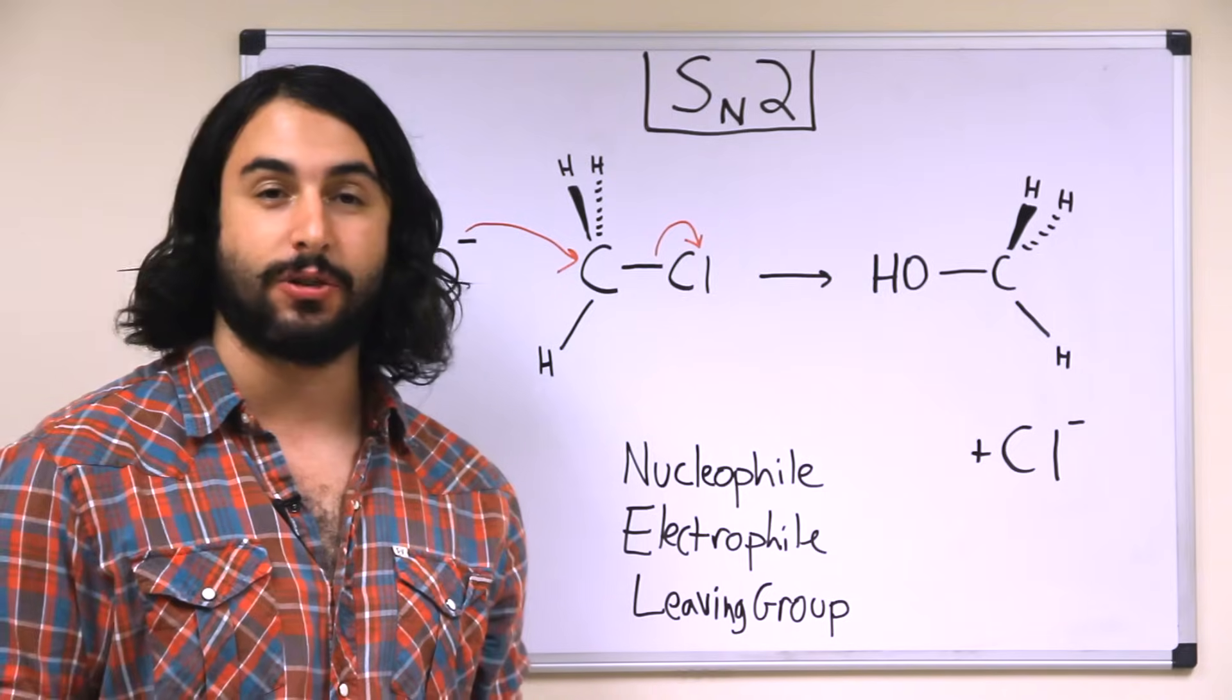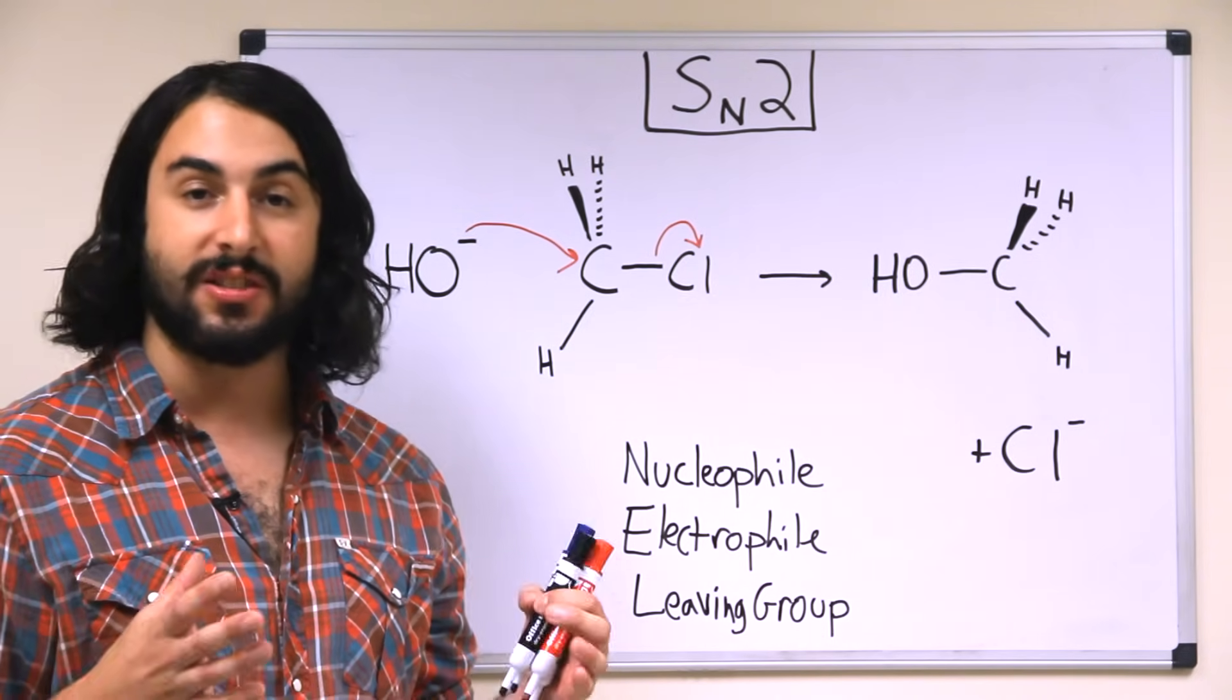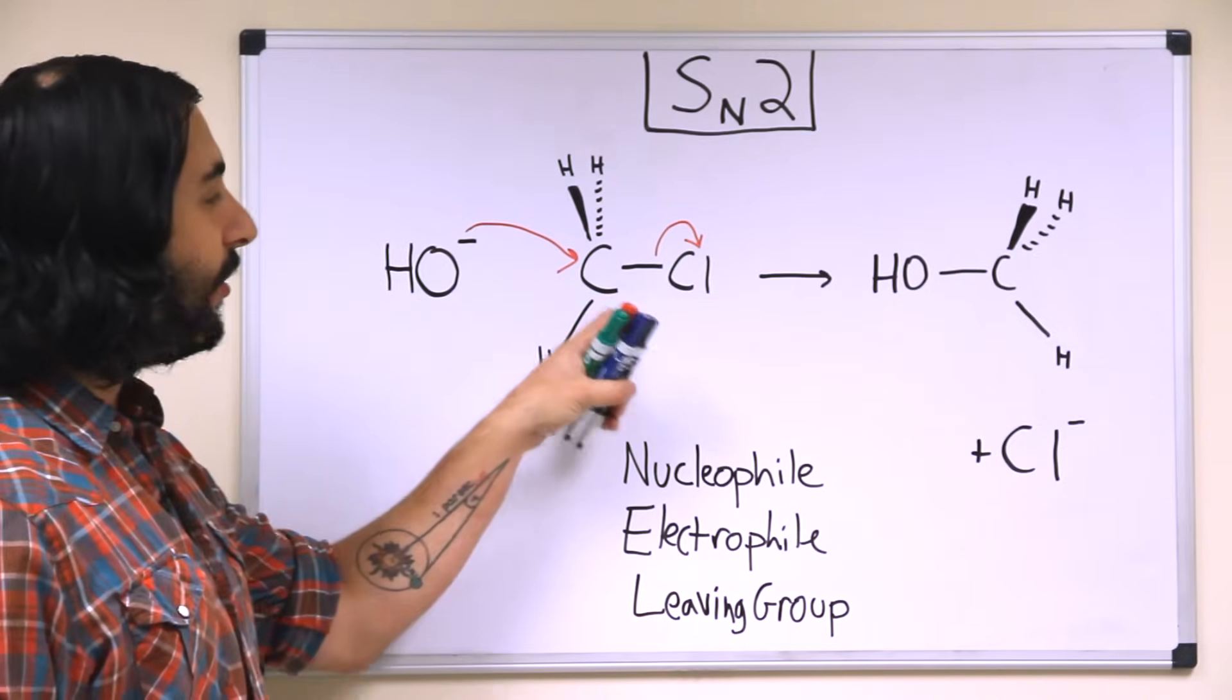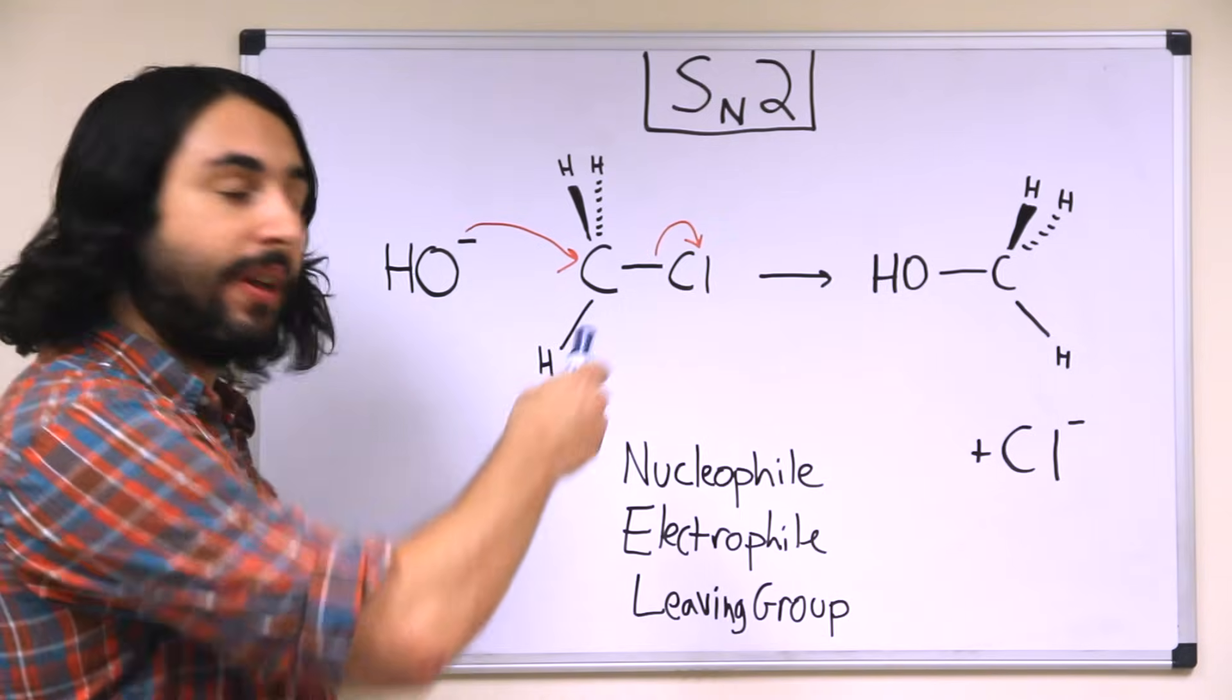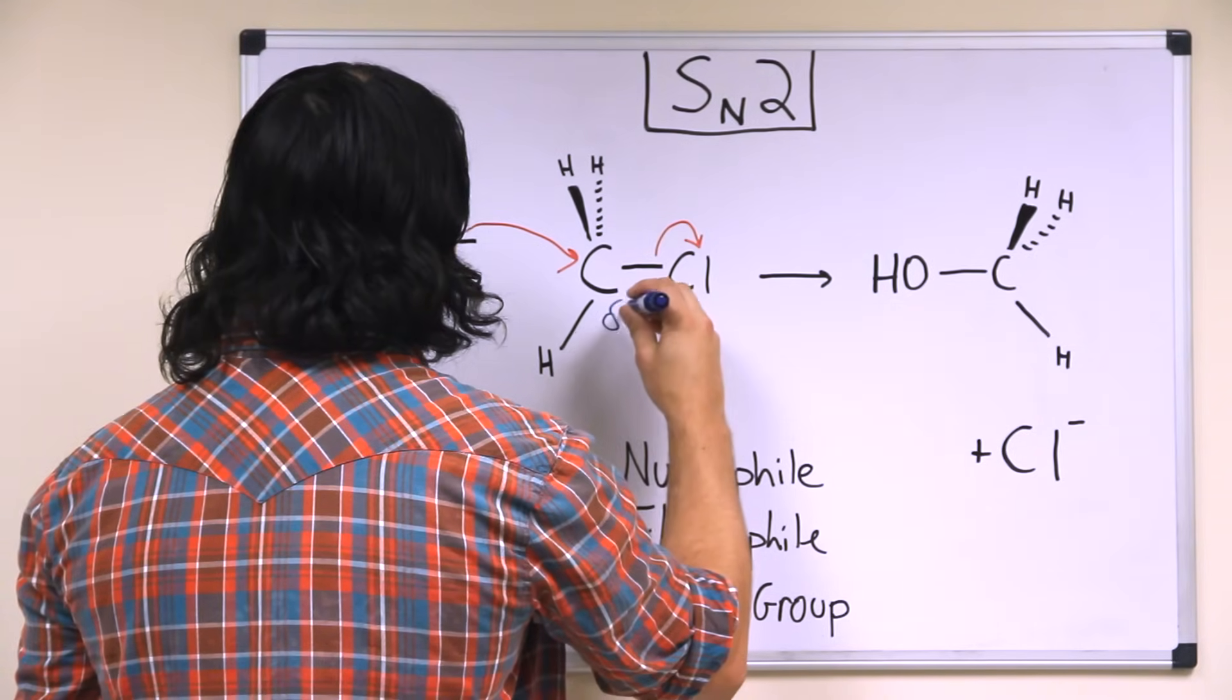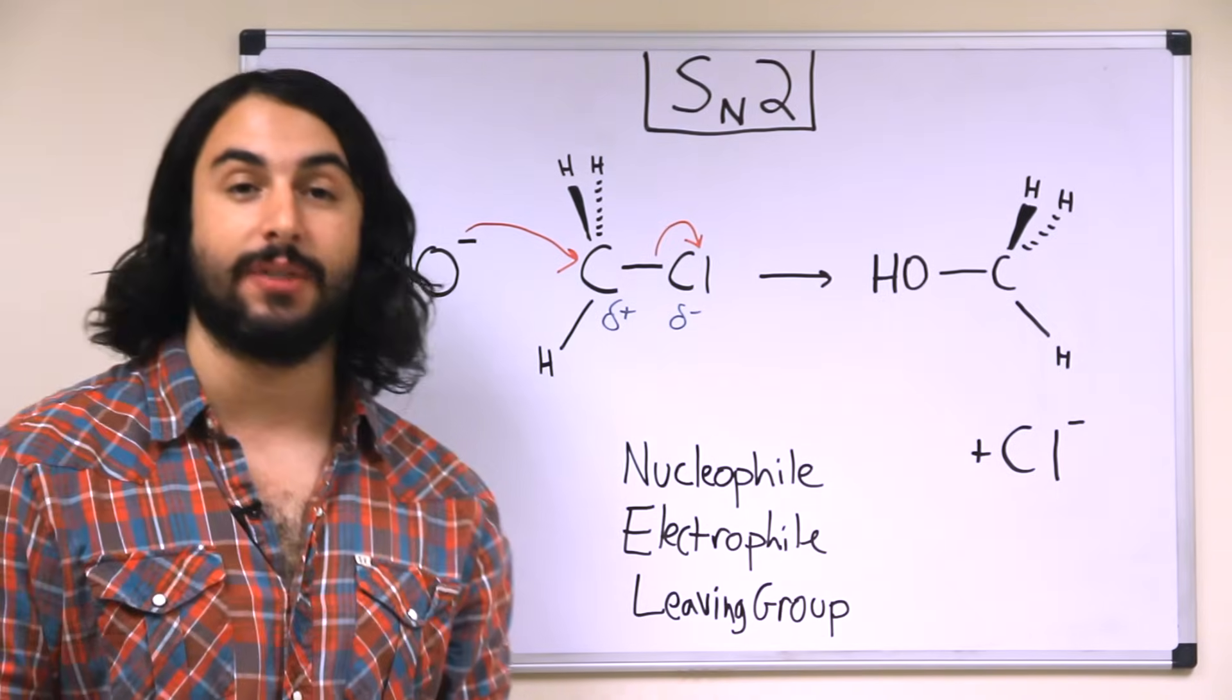Then there's always going to be an electrophile, so this is just the opposite. This is something with electron deficiency. So here, this carbon atom is acting as the electrophile because of the polarity of this bond. We all know that chlorine is more electronegative than carbon